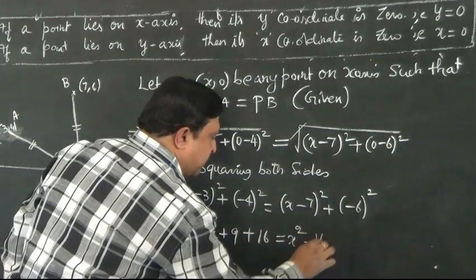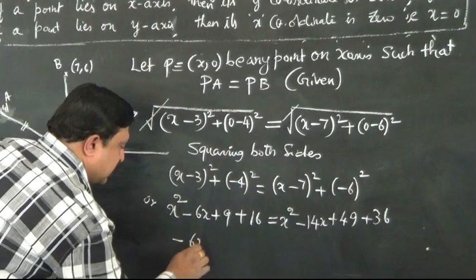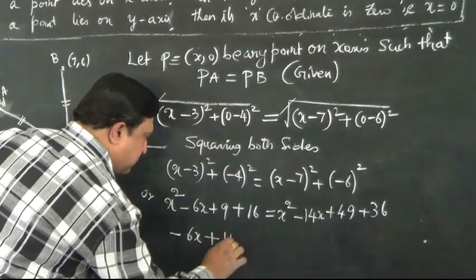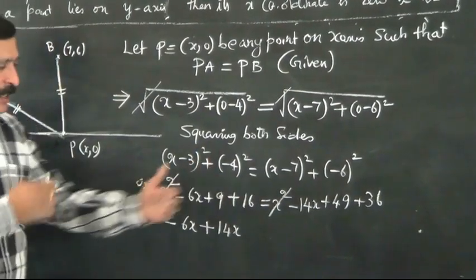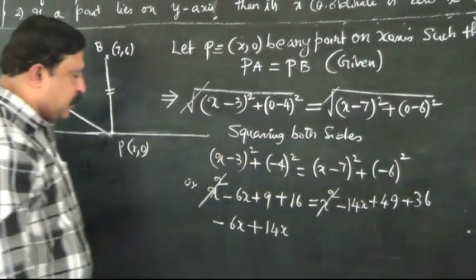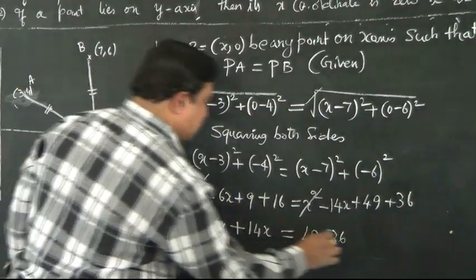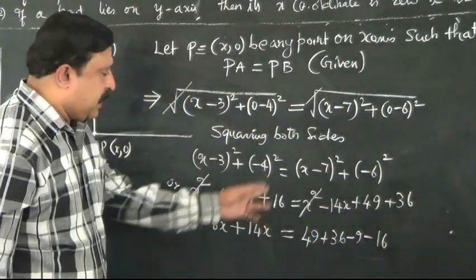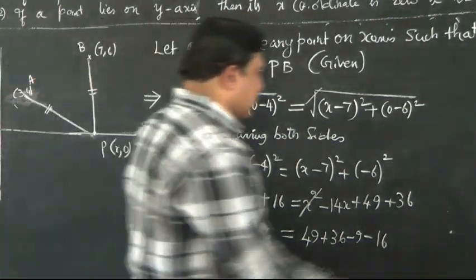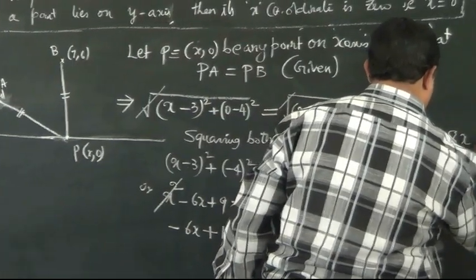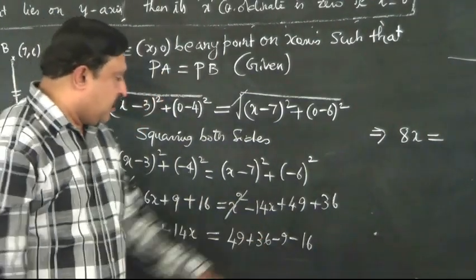Squaring both sides, we get x squared minus 6x plus 9 plus 16 equals x squared minus 14x plus 49 plus 36. The x squared terms cancel. Bringing terms to the LHS: minus 6x plus 14x, which gives plus 8x on the left. On the right: 49 plus 36 minus 9 minus 16.